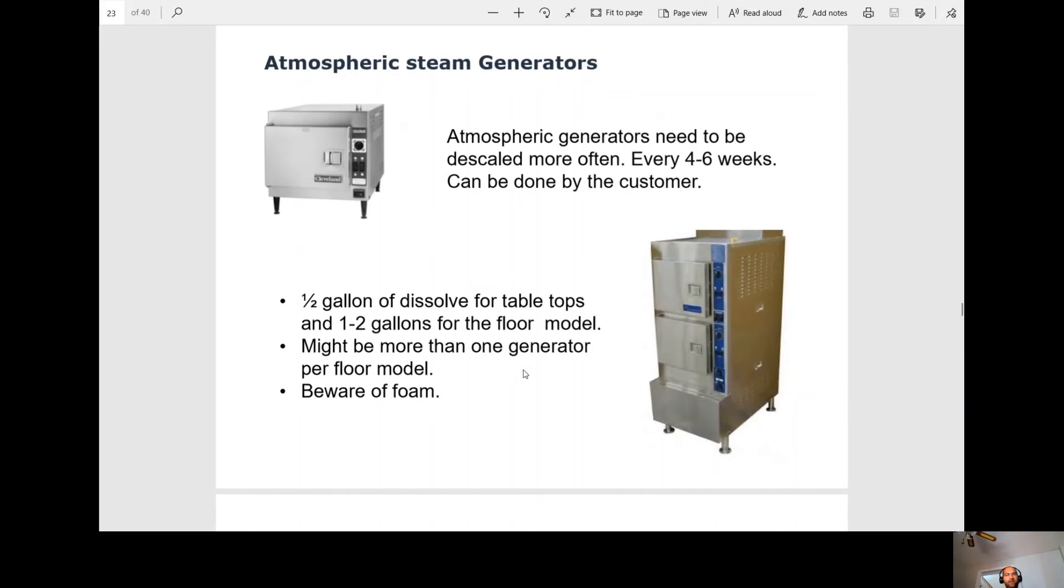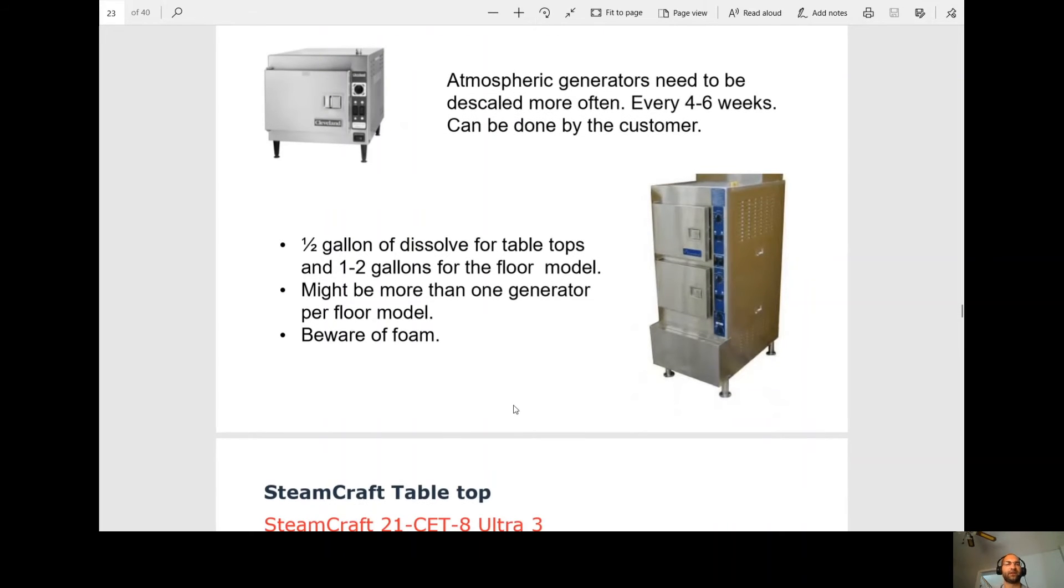Now we're going to go over to the atmospheric steam generators. So this is a self-contained unit. Atmospheric generators need to be descaled more often. They can be descaled every 4 to 6 weeks by the customer. So the customer will come up here, take this cap off, pour it in. Your customer can do that every 4 to 6 weeks. Half a gallon of dissolve for tabletops and 1 to 2 gallons for the floor model. So this would be the tabletop. This would be the floor model. As you can see, one's bigger than the other. That's why we need more dissolve in there.